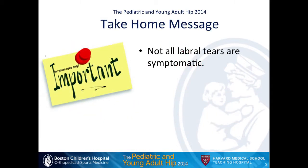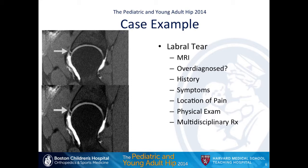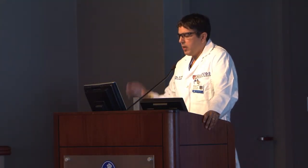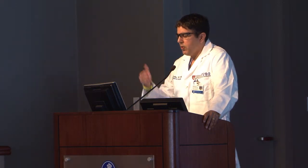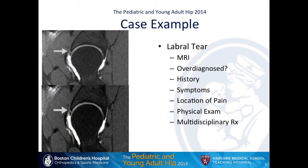The first take-home message is that not all labral tears are symptomatic. It used to be common to have patients come in with five or six years of hip pain before we finally got an MRI arthrogram, saw a labral tear, and looked very smart. Now it's almost flipped — we see lots of patients coming in already with an MRI arthrogram, many without x-rays at all, being referred for a labral tear. So the question is: are we over-diagnosing this? When we see these patients, it's very important to figure out their real diagnosis through history, physical exam, location of pain, and what treatment they've had.